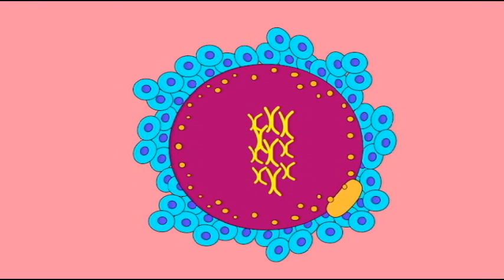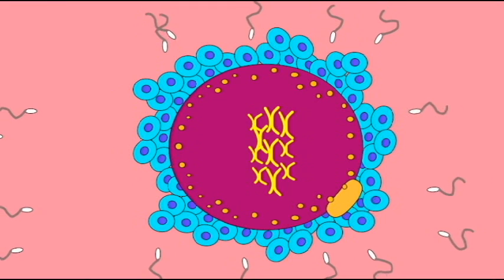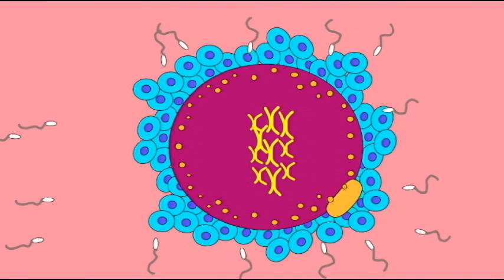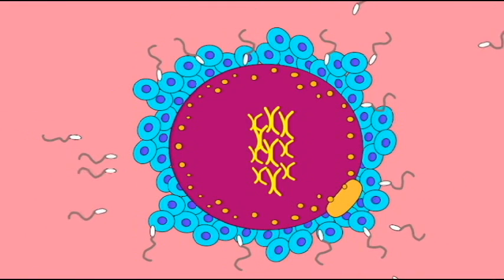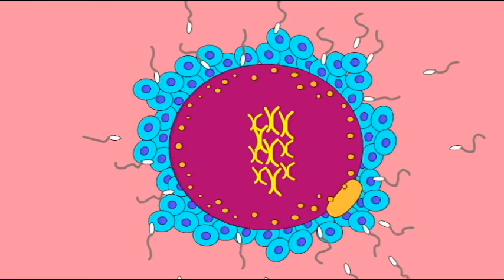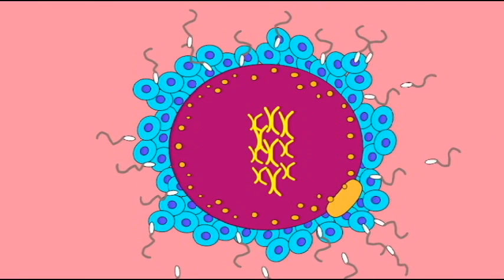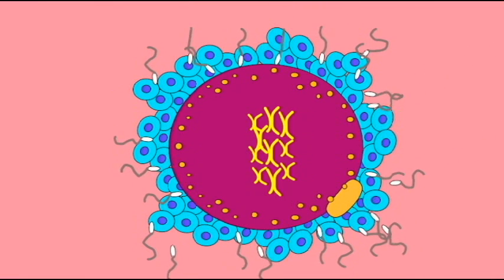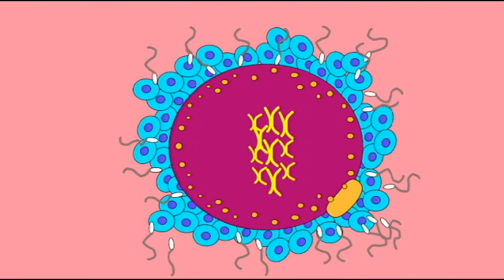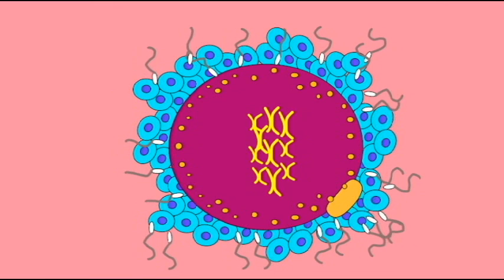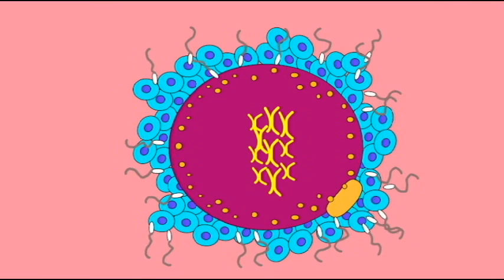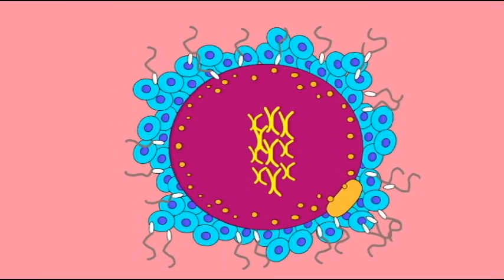Each sperm carries 23 chromosomes. If one sperm fertilizes an ova, there will be a total of 46 chromosomes in the zygote. However, if more than one sperm penetrates the ova, then the zygote may possess more than 46 chromosomes — 69, 92, or more.